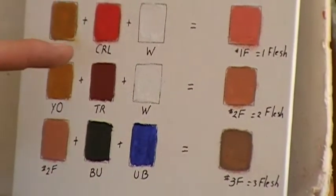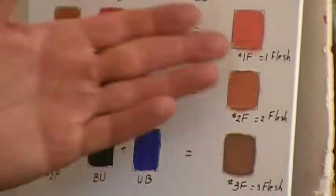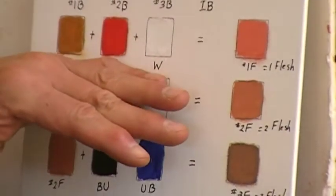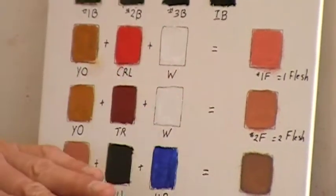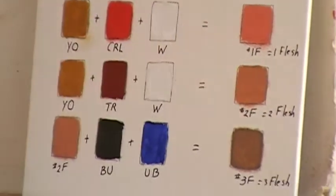Yellow ochre, cadmium red light and white will give me a flesh tone. These are the ones that I wanted you to get - the six colors that I wanted you to get plus white.